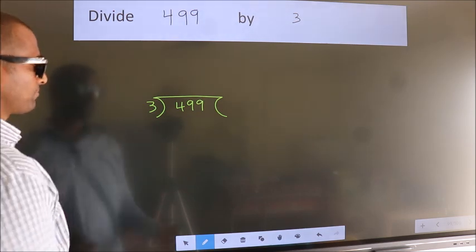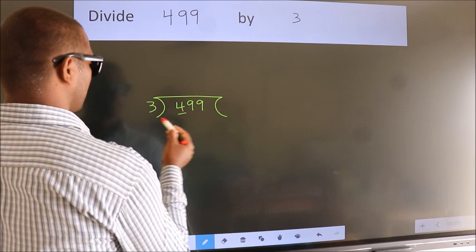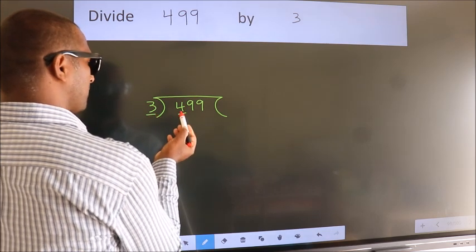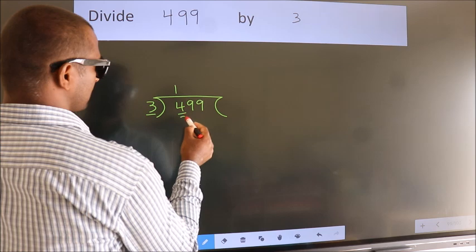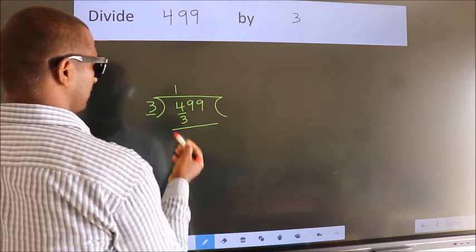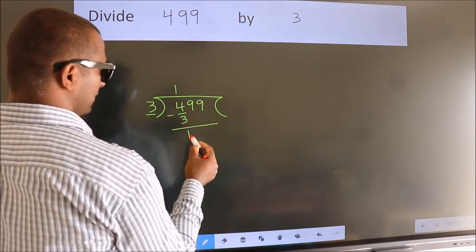Next, here we have 4, here 3. A number close to 4 in the 3 table is 3—1 times 3. Now we should subtract. We get 1.